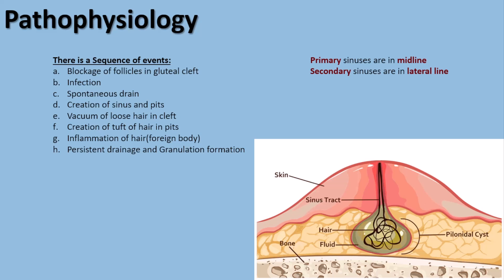Regarding pathophysiology, the sequence of events begins with blockage of follicles in the intergluteal cleft, resulting in constant inflammation and drainage of pus. This leads to creation of sinuses and pits in the intergluteal cleft. These clefts are capable of vacuuming loose hair in the anal area, resulting in creation of hair tufts in the pits.